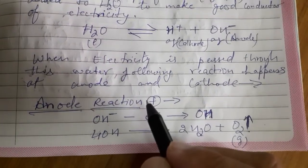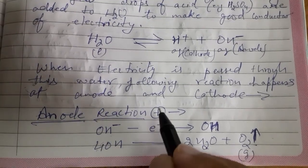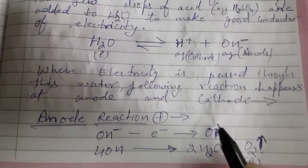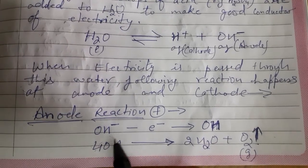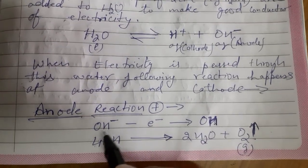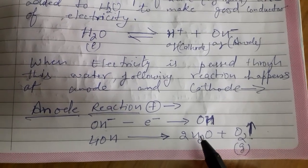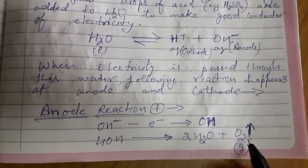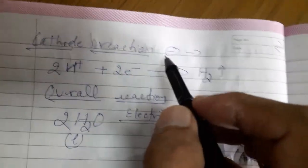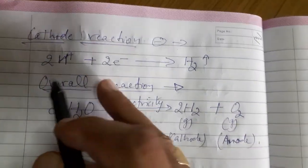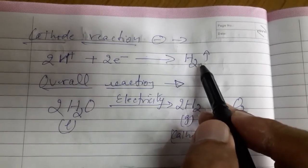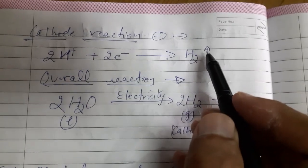At the anode, OH⁻ ions lose their electrons and change into neutral OH species. These neutral OH species are unstable, so four such OH species rearrange to form two water molecules and liberate oxygen gas. This is how oxygen gas is liberated at the anode in electrolysis of water. At the cathode, H⁺ ions gain electrons, get reduced, and change into hydrogen gas. Therefore, hydrogen gas is liberated at the cathode.